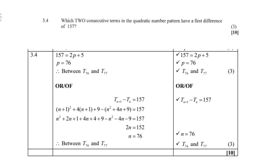Question 3.4: which two consecutive terms in the quadratic pattern have a first difference of 157? Using tp equals 2p plus 5: set 157 equals 2p plus 5, giving p equals 76. So the first difference of 157 is between term 76 and term 77. Alternatively, setting t(n+1) minus tn equals 157 — that is (n+1) squared plus 4(n+1) plus 9, minus (n squared plus 4n plus 9) equals 157 — and solving gives n equals 76.